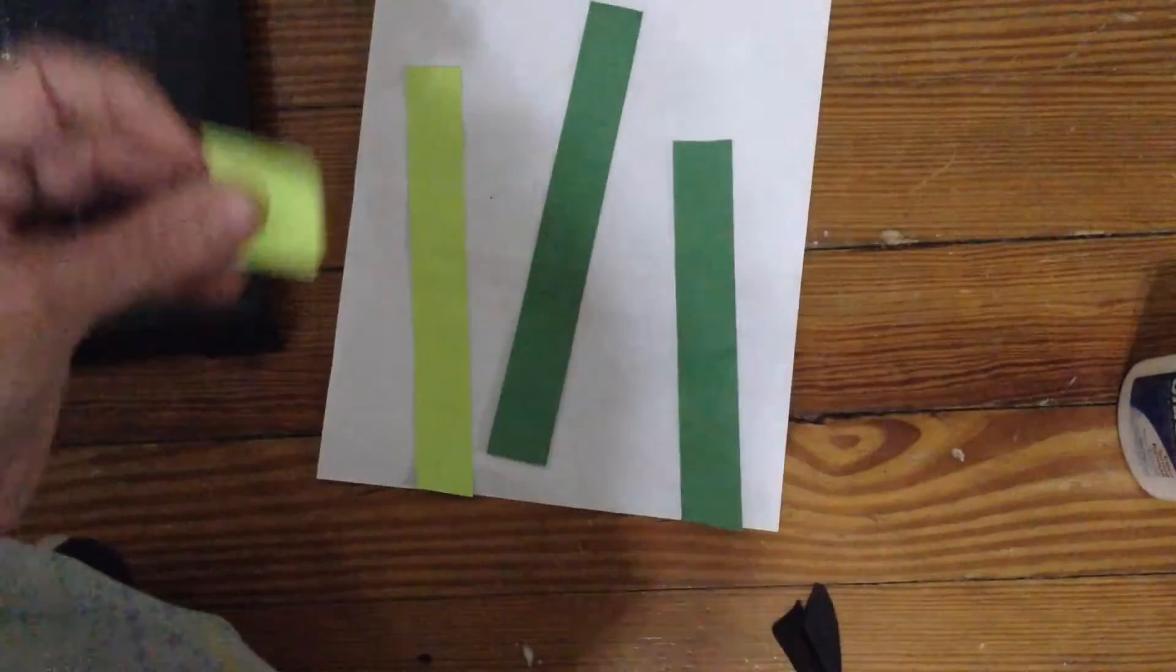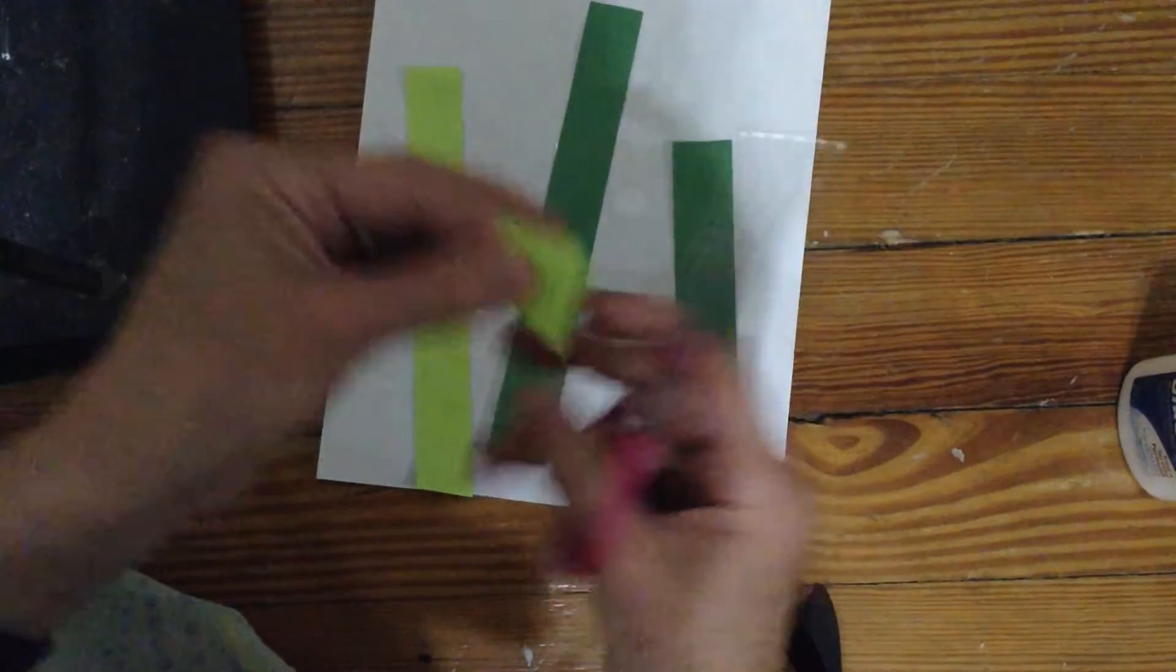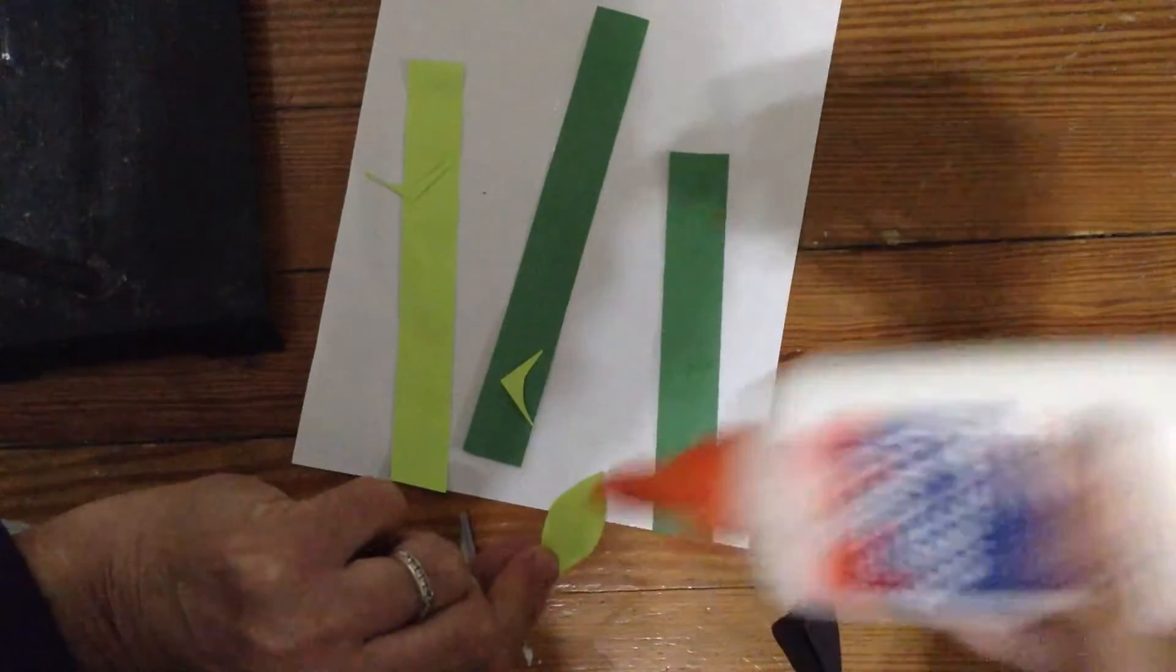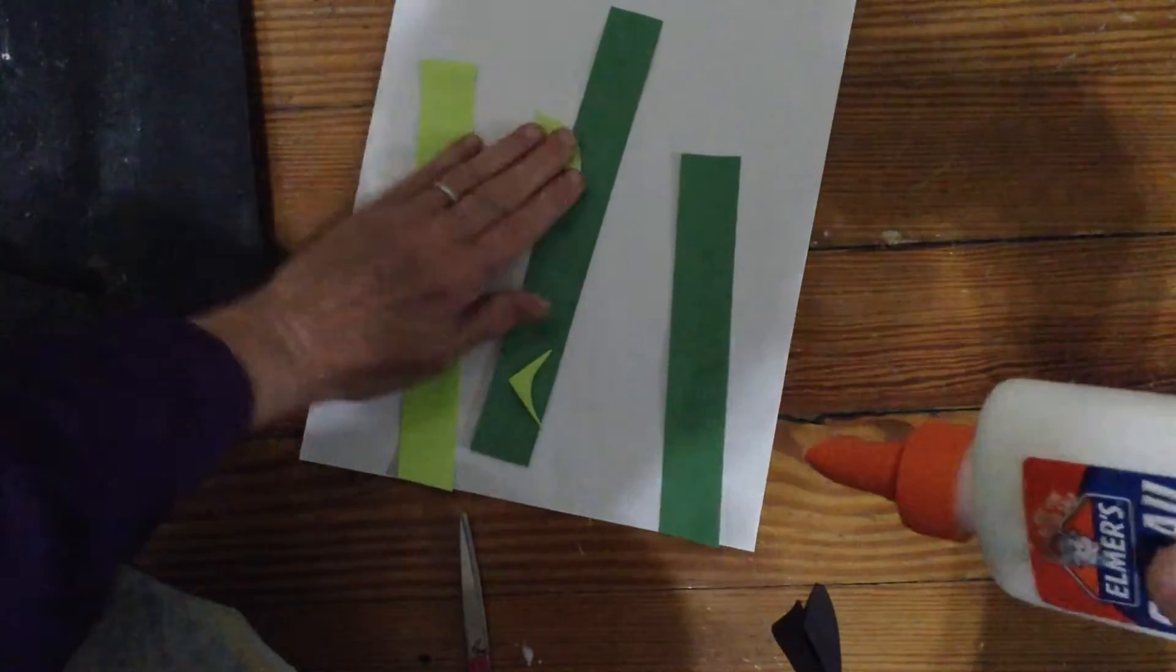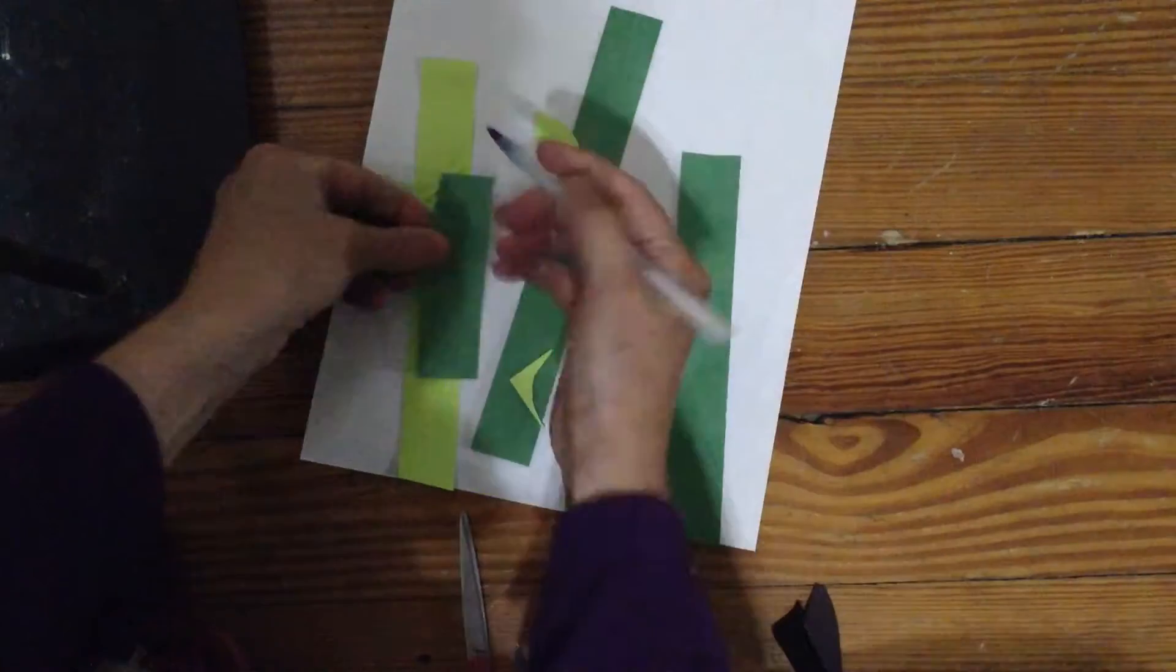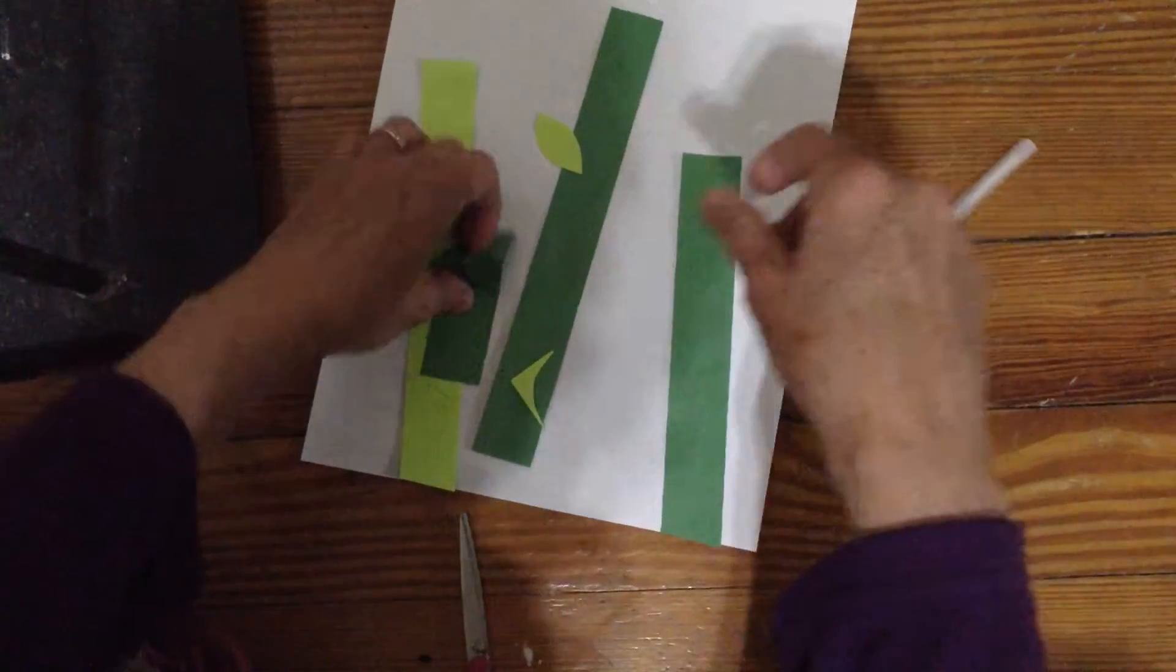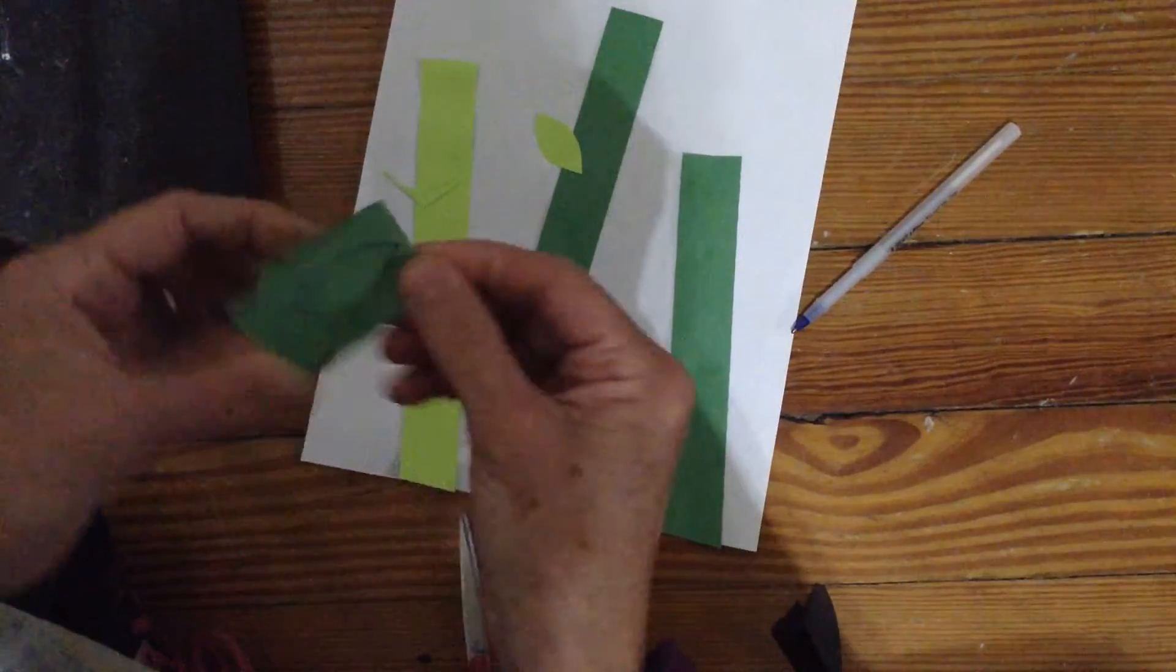And now we can make leaf shapes with these. So I'm gonna just make that football shape. A few dots of glue. Of course I can draw it first and then cut. I can even fold it so I cut out two at the same time.